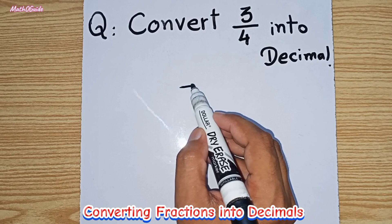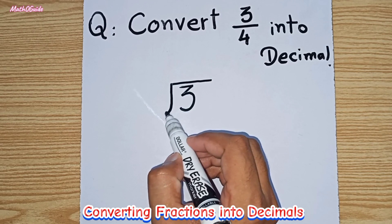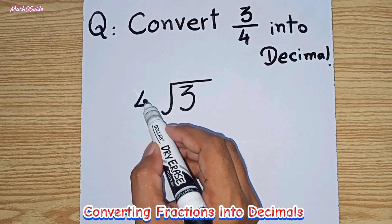So we have to divide it. We can write 3 upon 4 as we have 3 as dividend and 4 as divisor, so we have to divide 3 by 4.